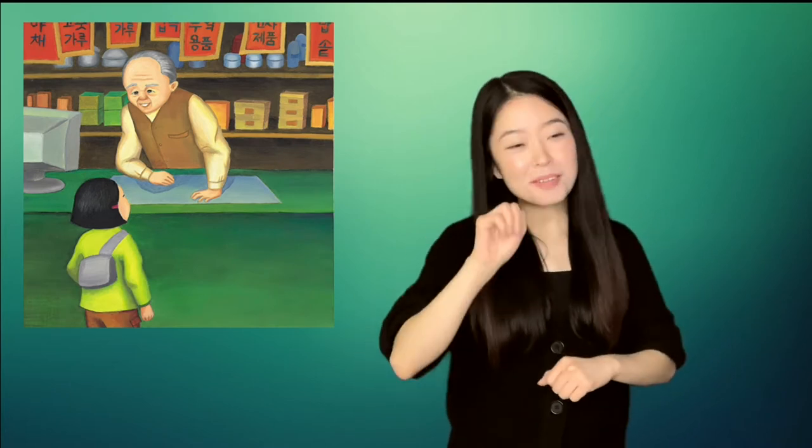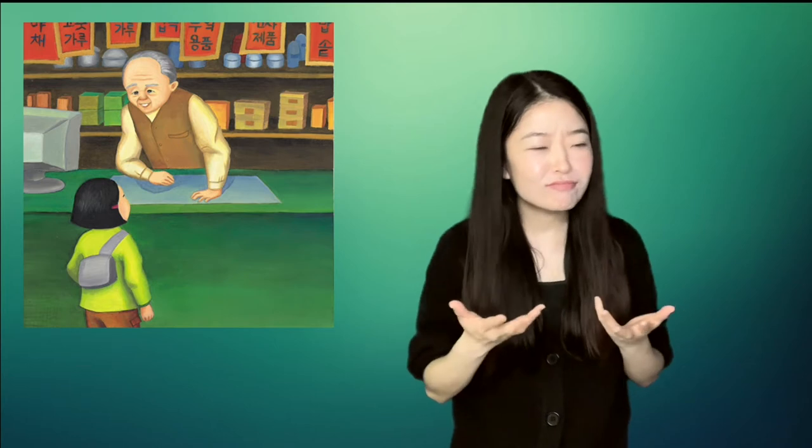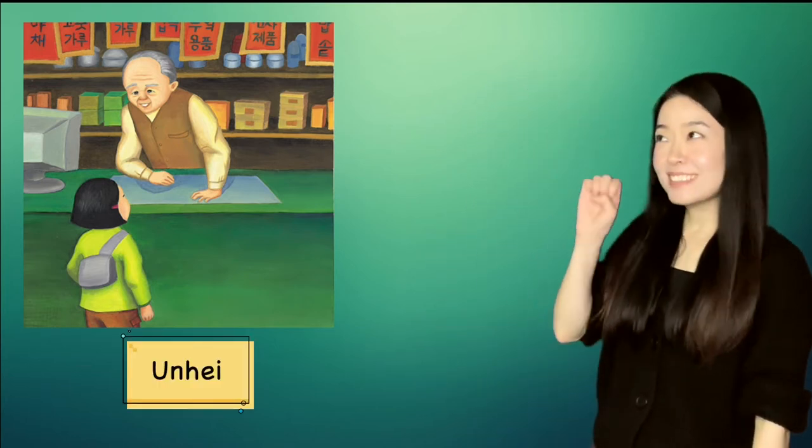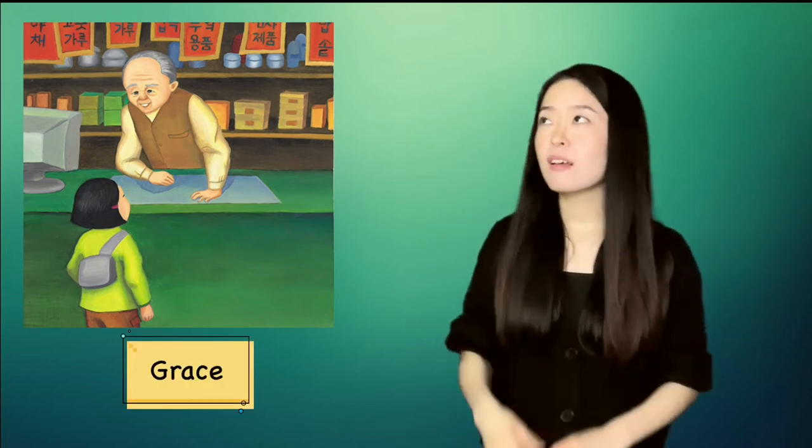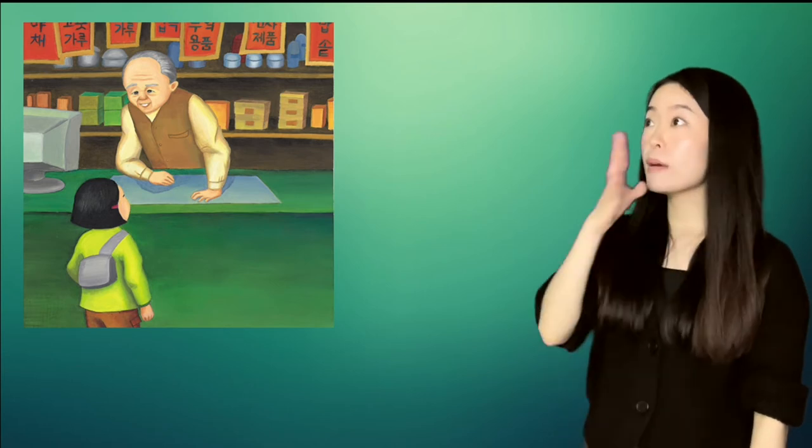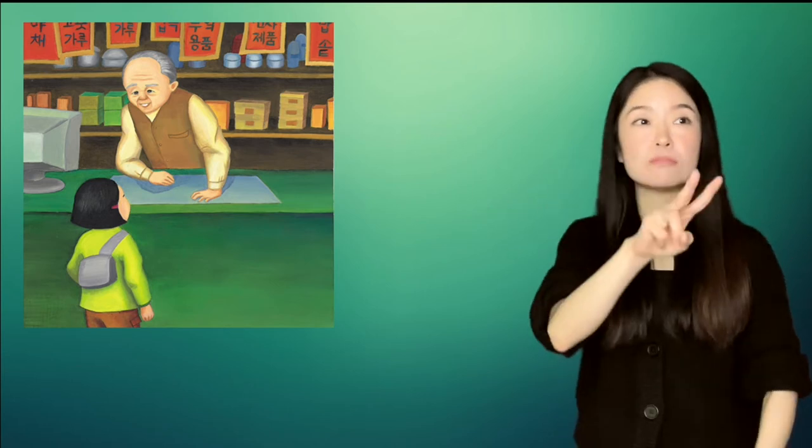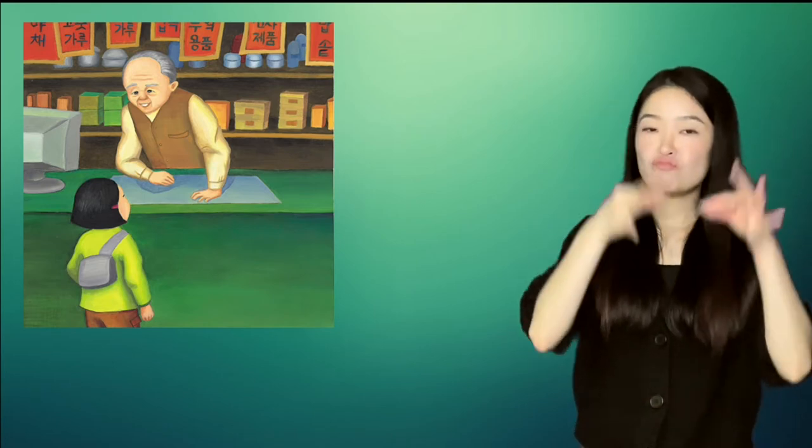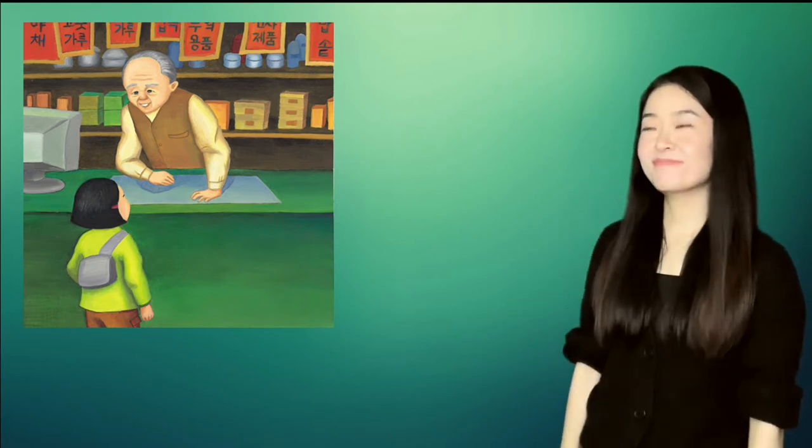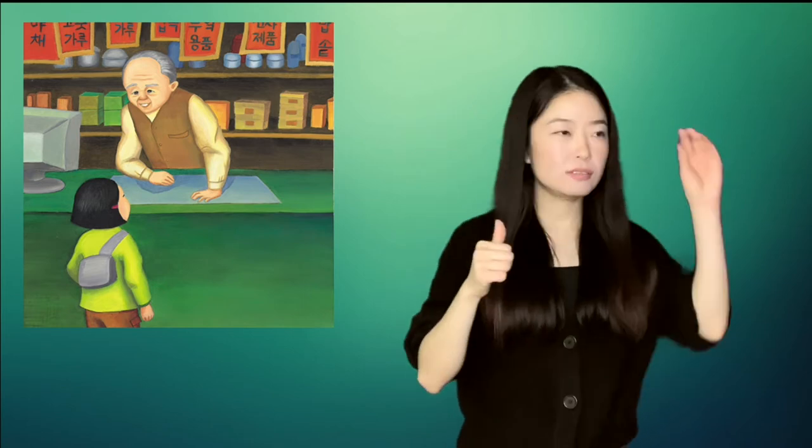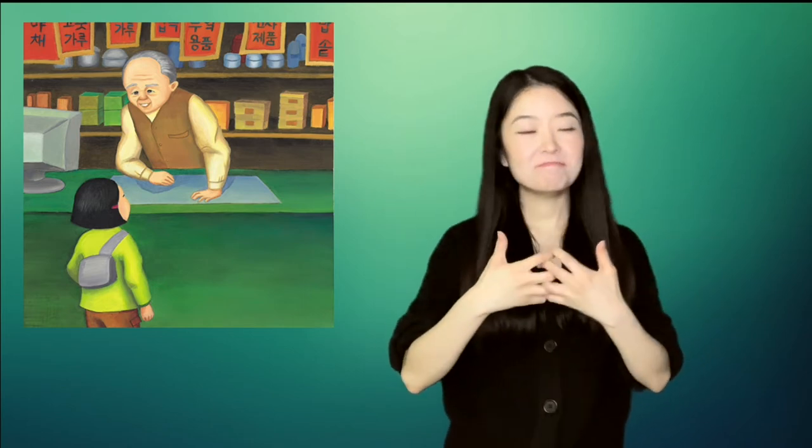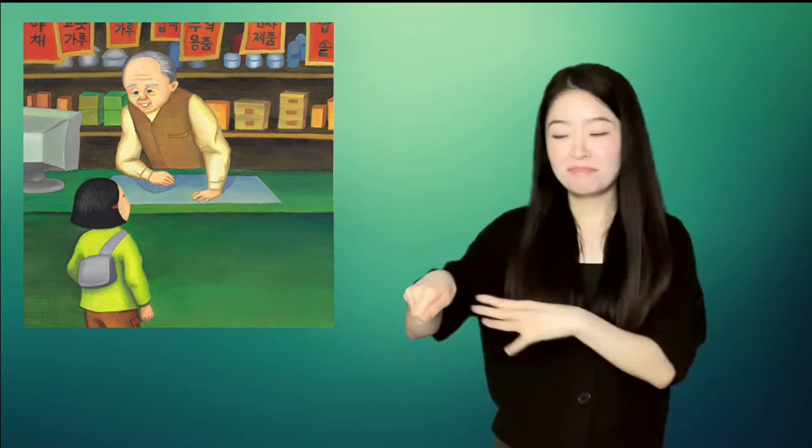I'm Mr. Kim, he said. And what is her name? Unhei, she answered. Ah, what a beautiful name, he said. Unhei. Doesn't it mean grace? Unhei nodded again. My mother and grandmother went to a name master for it, she told him. A graceful name for a graceful girl, Mr. Kim said as he put their groceries into bags. Welcome to the neighborhood, Unhei.